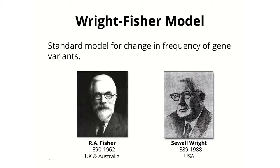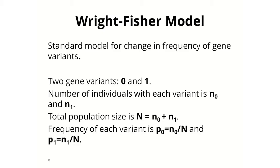To formalize these ideas using mathematics and computational science, the most standard model to study the change in frequency of gene variants is the Wright-Fisher model, named after Sewell Wright and Ronald Fisher. Fisher is the same famous Fisher who invented p-values and the Fisher exact test — he invented this stuff to study population genetics, so he's both the father of population genetics and of modern statistics. In the Wright-Fisher model, you have two gene variants, zero and one, like the brown and green beetles. We follow n0 and n1, the number of individuals with each variant. Total population size N is constant, and p0 and p1 are the frequencies of each variant.